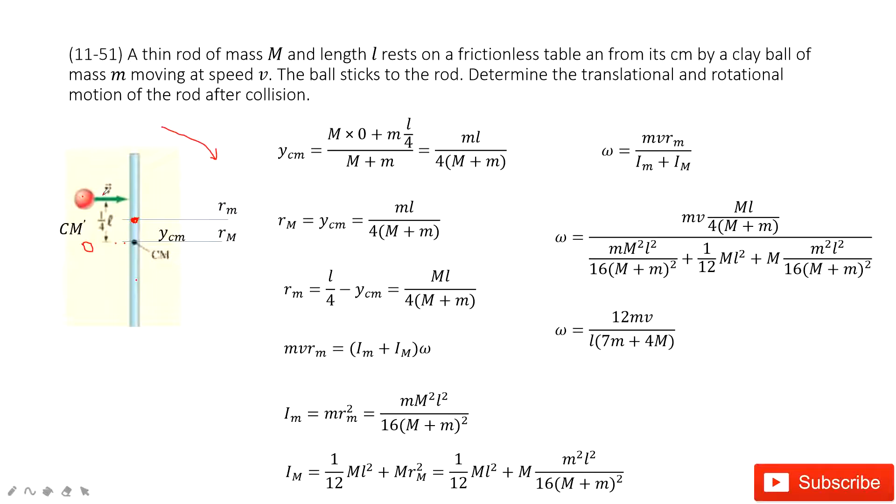for this system, stick and the clay, is just the capital M times zero plus the small m times one fourth of the L, and then divided by total mass. We get it as y_cm. So the y_cm is this one. So that means this is the rotation axis.